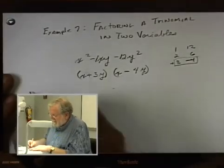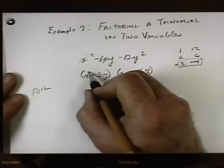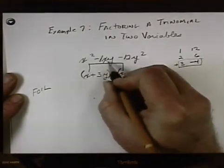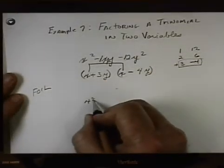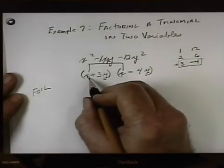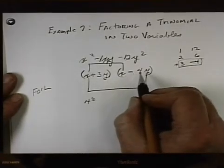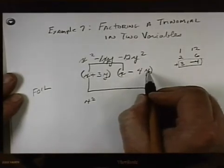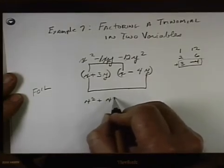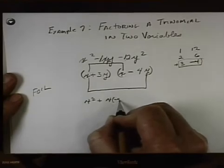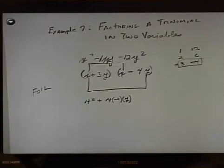Let's just check that. How do we check it? Well, we use FOIL. Remember what FOIL was. First times first. This is F. First times first. X times X is X squared. Outside times outside. X times minus 4Y. That's plus X times minus 4 times Y.